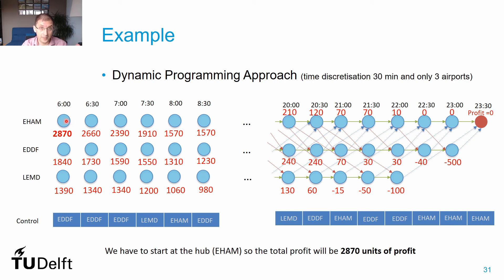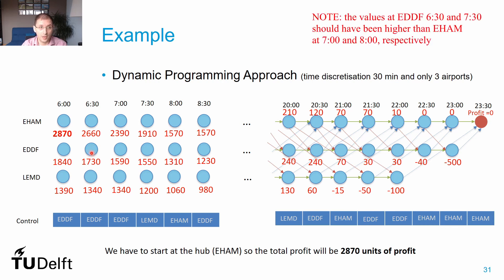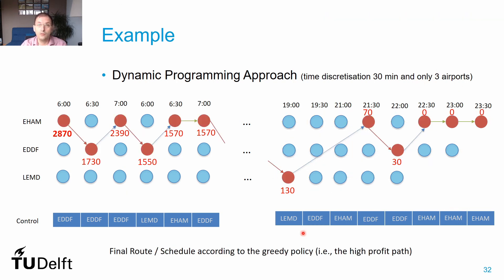Starting at Amsterdam at 6 am, the control array says to fly to Frankfurt. Once in Frankfurt, staying on the ground loses money, so we fly back to Amsterdam. The control array again directs us to Frankfurt; staying there loses money, so we fly back. Back in Amsterdam, the array says to remain — no profitable demand for Frankfurt or Madrid. We continue this process: eventually flying to Madrid in the afternoon, returning to the hub, then flying to Frankfurt, arriving back at Amsterdam at 10:30 pm and staying until end of day.